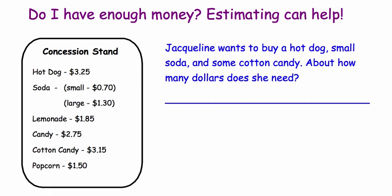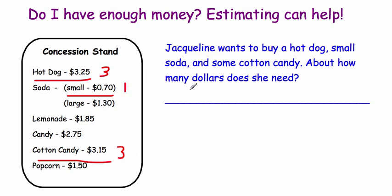Estimating can also help you figure out if you have enough money to purchase something. Jacqueline wants to buy a hot dog, a small soda, and some cotton candy. About how many dollars does she need? A hot dog is about three dollars, a small soda is about one dollar, and cotton candy is about three dollars. Three plus one is four, plus three is seven — so she needs about seven dollars. She'll need a little more with change, so about seven or eight dollars, and eight dollars would make sure to cover it all.